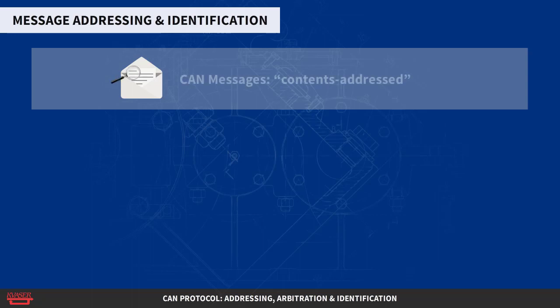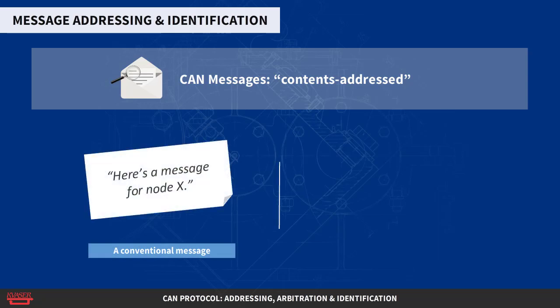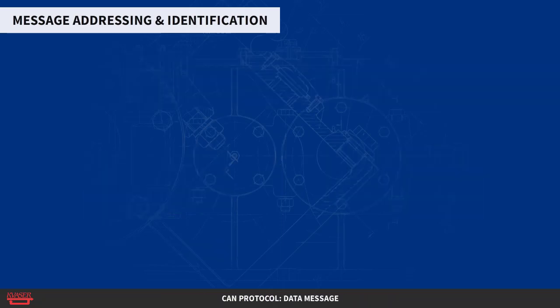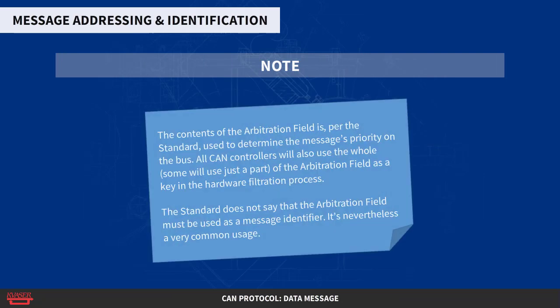CAN messages are said to be contents addressed. A conventional message address would be used like: "here's a message for node X." A contents address message is like: "here's a message containing data labeled X." The difference between these two concepts is small but significant. The contents of the arbitration field is, per the standard, used to determine the message's priority on the bus.